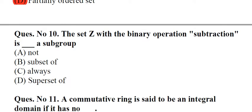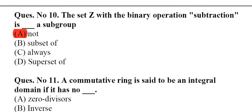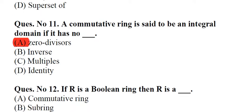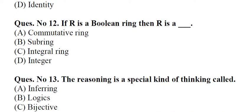Question number 10: The set Z with the binary operation subtraction is underscore a subgroup. A. Not, B. Subset of, C. Always, D. Superset of. Answer: A, Not. Question number 11: A commutative ring is said to be an integral domain if it has no underscore. A. Zero divisors, B. Inverse, C. Multiples, D. Identity. Answer: A, Zero divisors. Question number 12: If R is a boolean ring then R is a underscore. A. Commutative ring, B. Subring, C. Integral ring, D. Integer. Answer: A, Commutative ring.